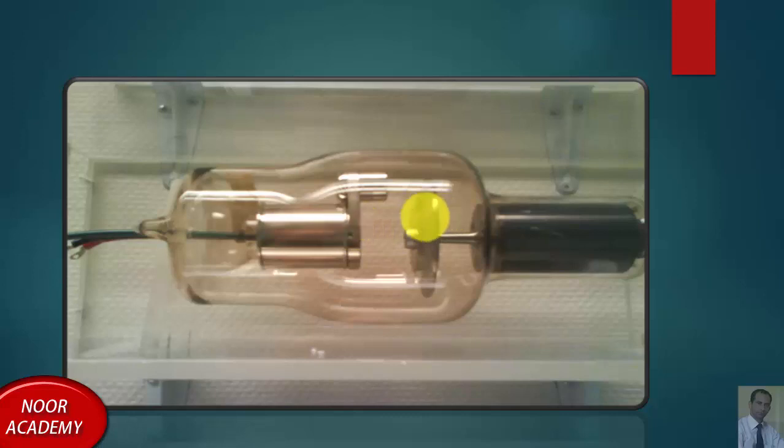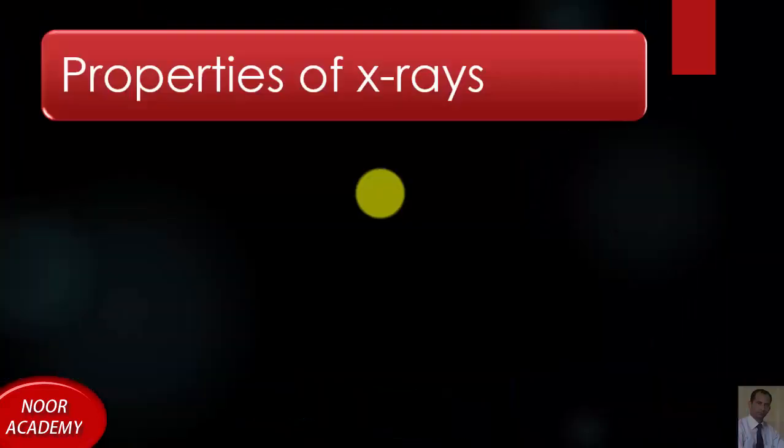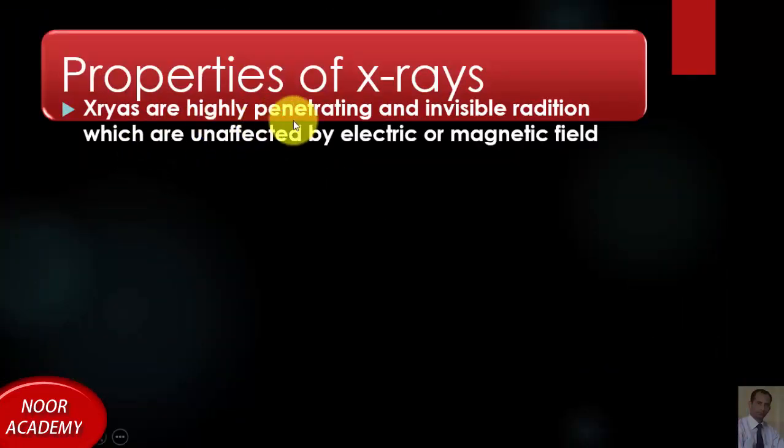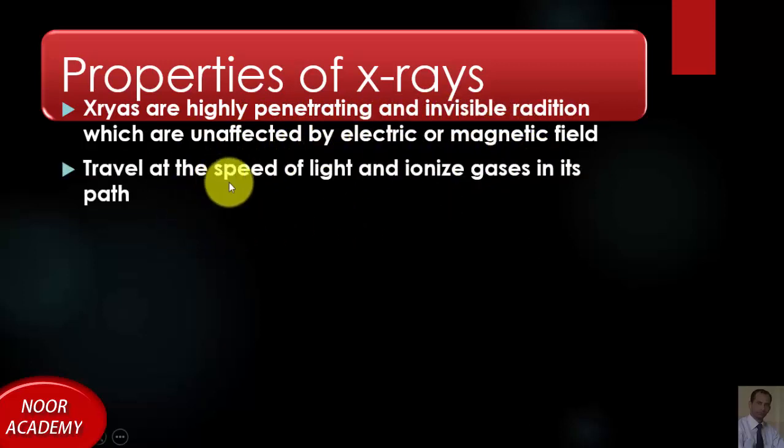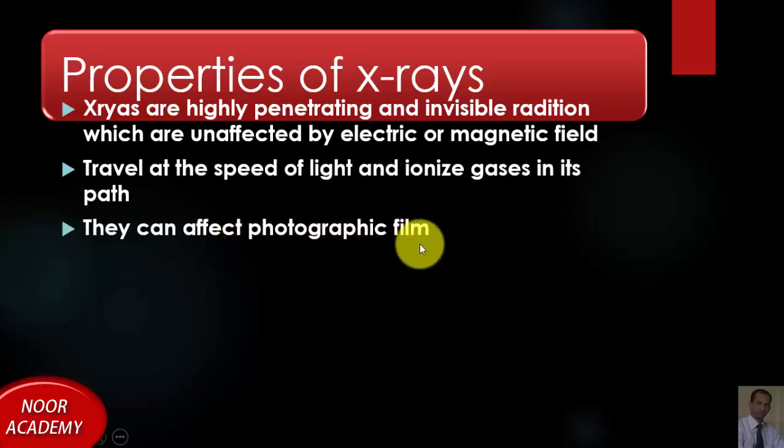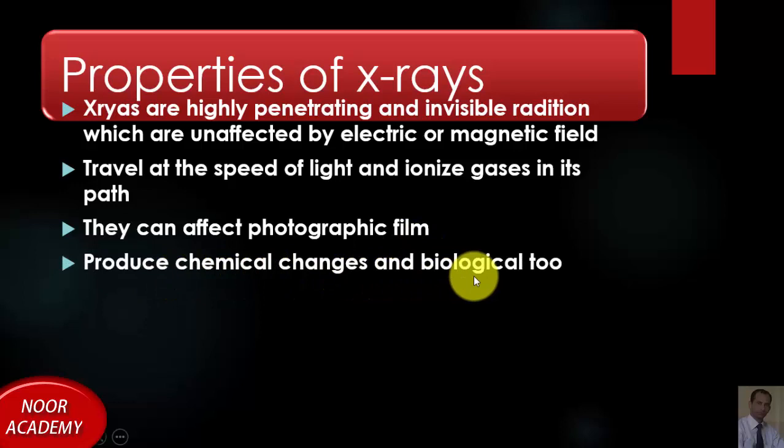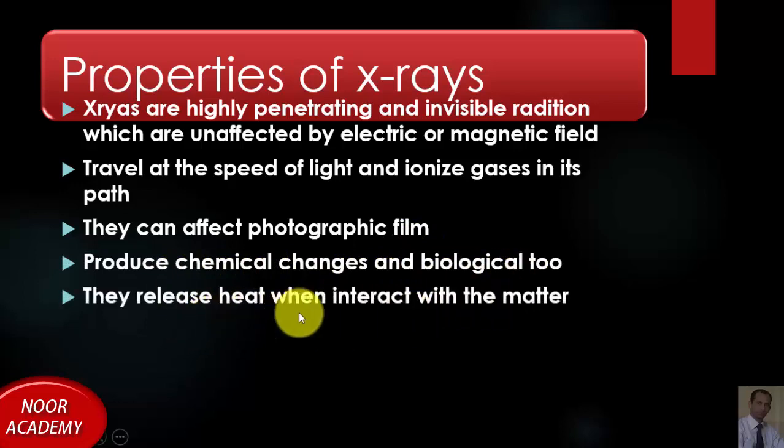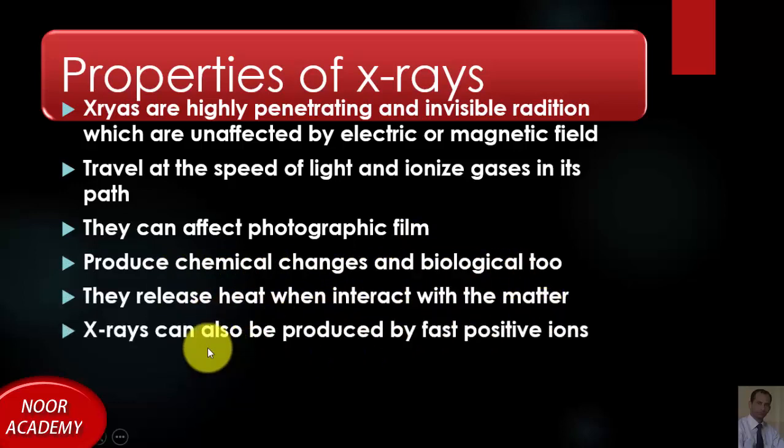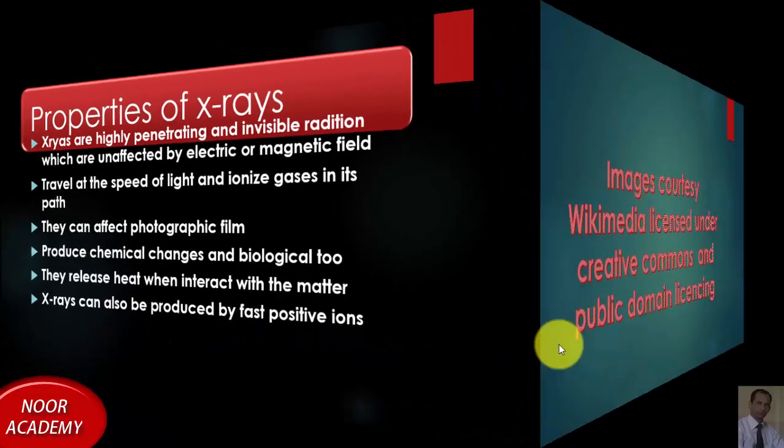Let's see some of the properties of X-rays. X-rays are highly penetrating and invisible radiation which are unaffected by electrical or magnetic field. They travel at the speed of light and ionize gases in their path. They can affect photographic film, produce chemical and biological changes, they release heat when they interact with matter. X-rays can also be produced by fast positive ions.